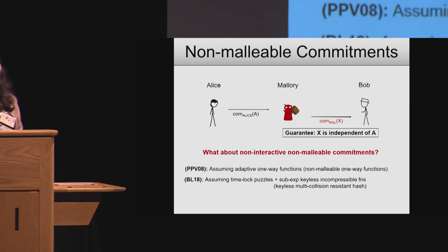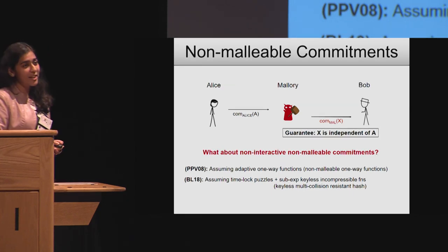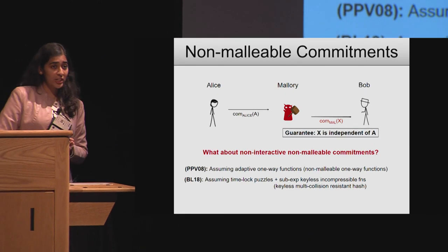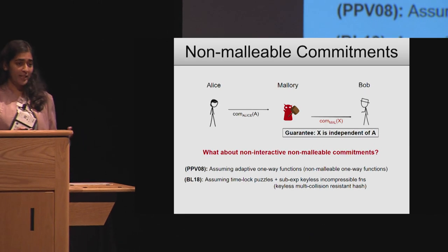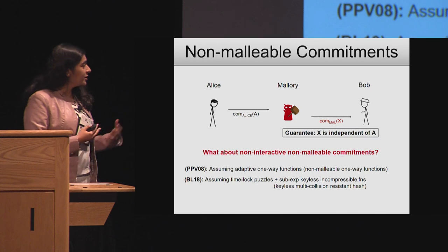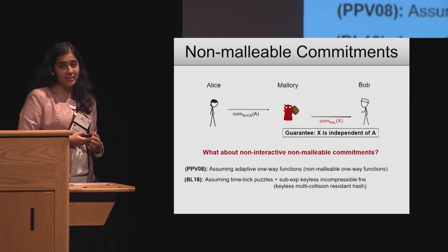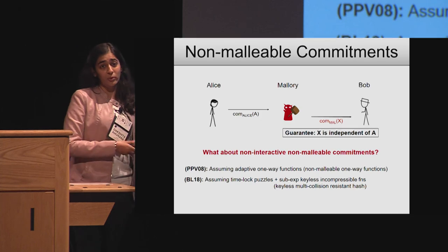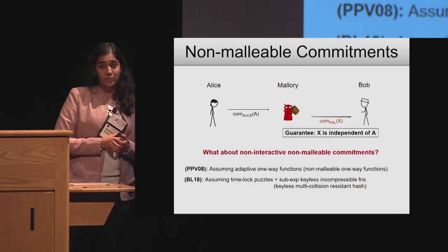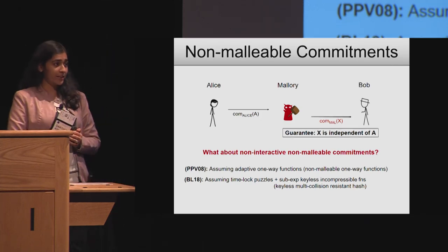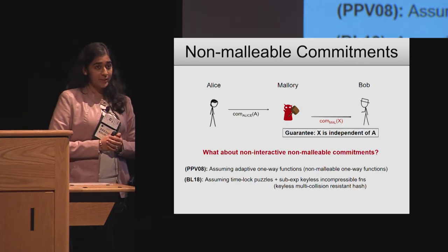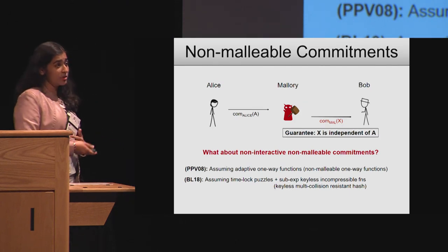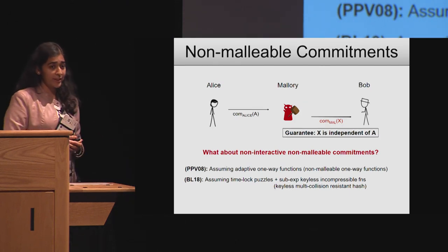Subsequently, ten years later, there was a work of Bittansky and Lin that showed that if one assumes time-lock puzzles and sub-exponential keyless incompressible functions — similar in spirit to the keyless multi-collision-resistant hash functions — then one can actually build non-interactive non-malleable commitments. However, these are not very well-studied assumptions. So can we do better in terms of assumptions?